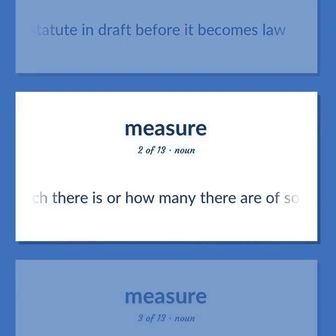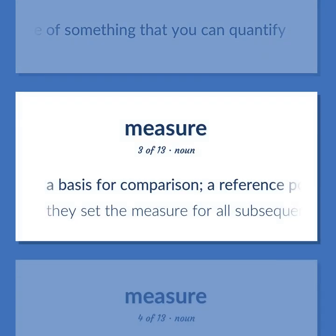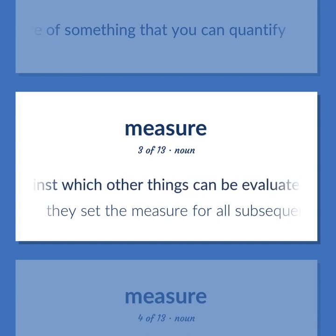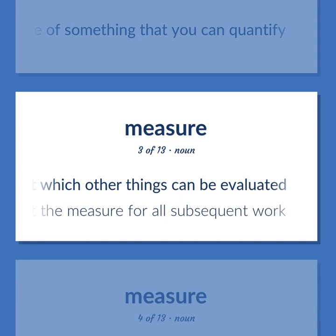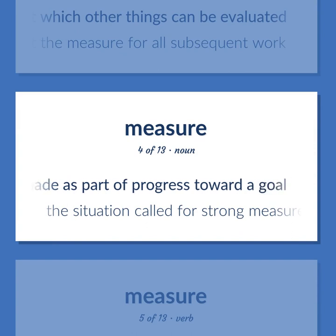How much there is or how many there are of something that you can quantify. A basis for comparison — a reference point against which other things can be evaluated. Example: They set the measure for all subsequent work. Any maneuver made as part of progress toward a goal — the situation called for strong measures.